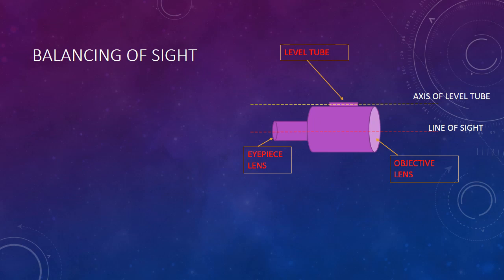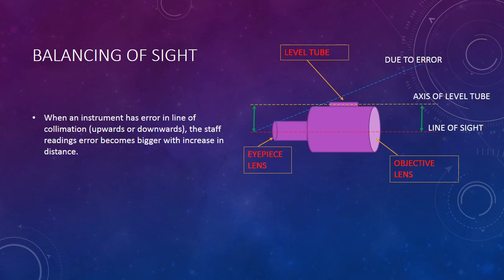In order to maintain correctness, both these lines should be parallel — the line of sight and the axis of the level tube. Both of them should be parallel, so the distance between both of them should be equivalent. But due to some defects or errors, these two lines are sometimes not parallel at all. When parallelism is not achieved, it may form a tilting. So when an instrument has an error in the line of collimation — upward or downward — the staff reading error becomes bigger with increase in distance. This is simple geometry or trigonometry.